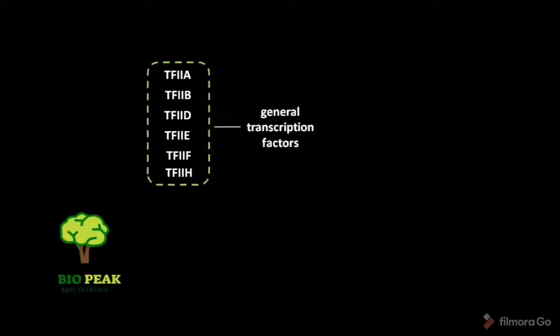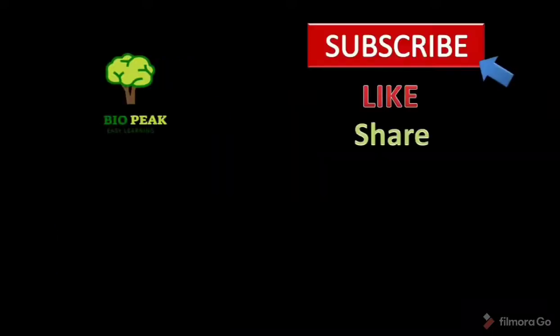TFIIA, TFIIB, TFIID, TFIIE, TFIIF, and TFIIH are called general transcription factors. They are called as such because they are needed at nearly all promoters used by RNA polymerase II.